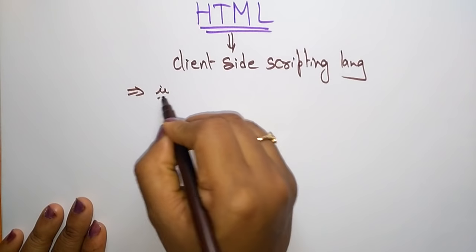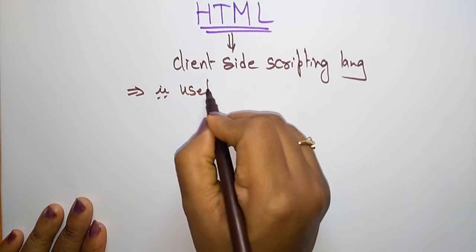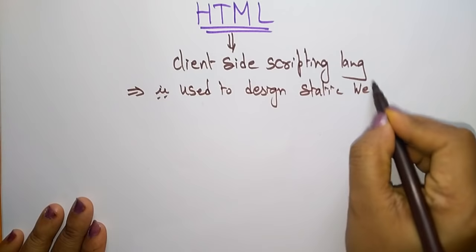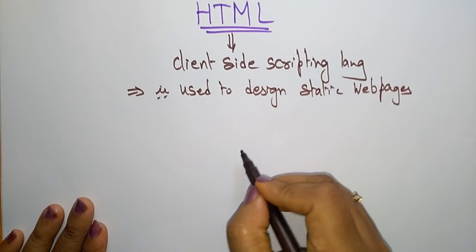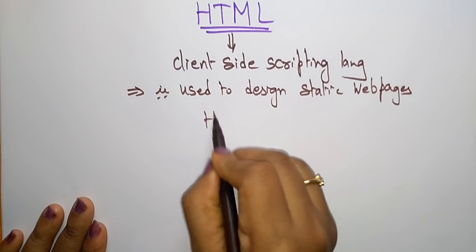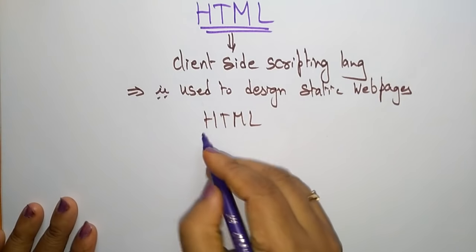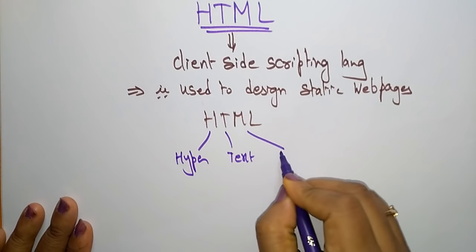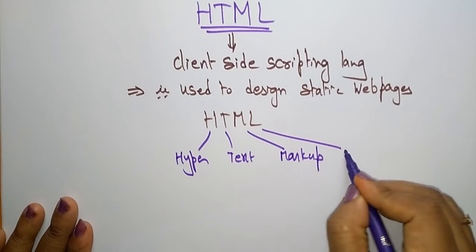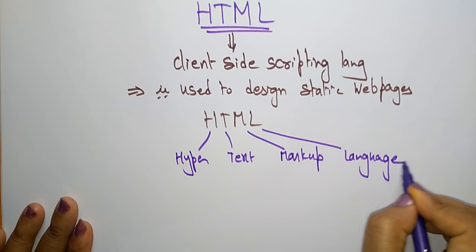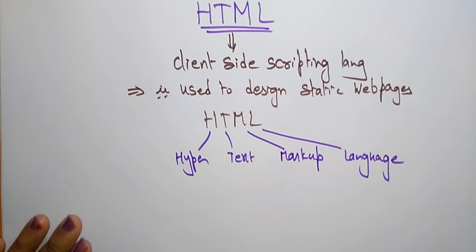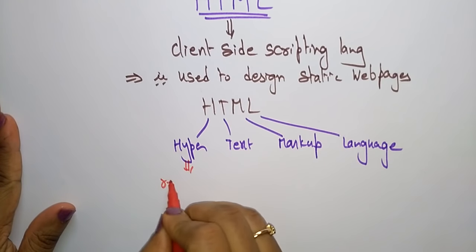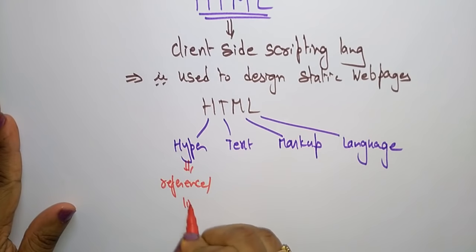So what exactly is HTML? HTML means Hyper Text Markup Language. H means Hyper, T means Text, M means Markup, L is Language. Hyper is nothing but a link — you can call it a reference or a link — it is a link to where you have to navigate, so that is a hyperlink.